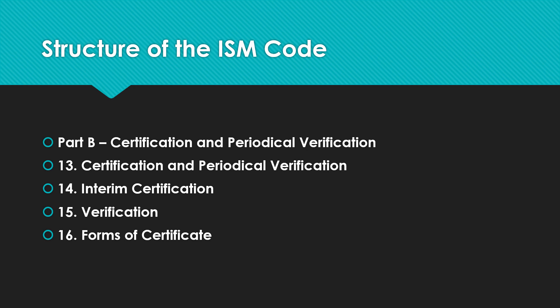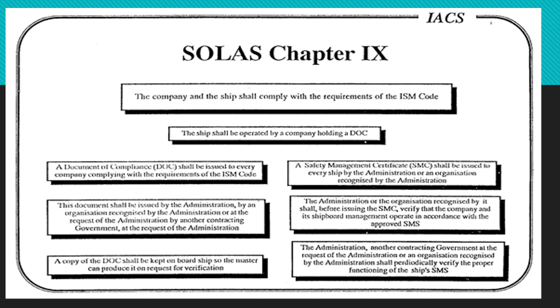The forms of certificates — the Document of Compliance, the Safety Management Certificate, the Interim Document of Compliance, and the Interim Safety Management Certificate — should be drawn up corresponding to the models prescribed in the ISM Code. A Document of Compliance shall be issued for every company complying with the ISM Code requirements, issued by the flag state or a recognized organization. A copy of the Document of Compliance shall be kept on board so that the master can produce it on request. The Safety Management Certificate shall be issued to every ship by the flag state; the original is kept on board and a copy is held by the company.